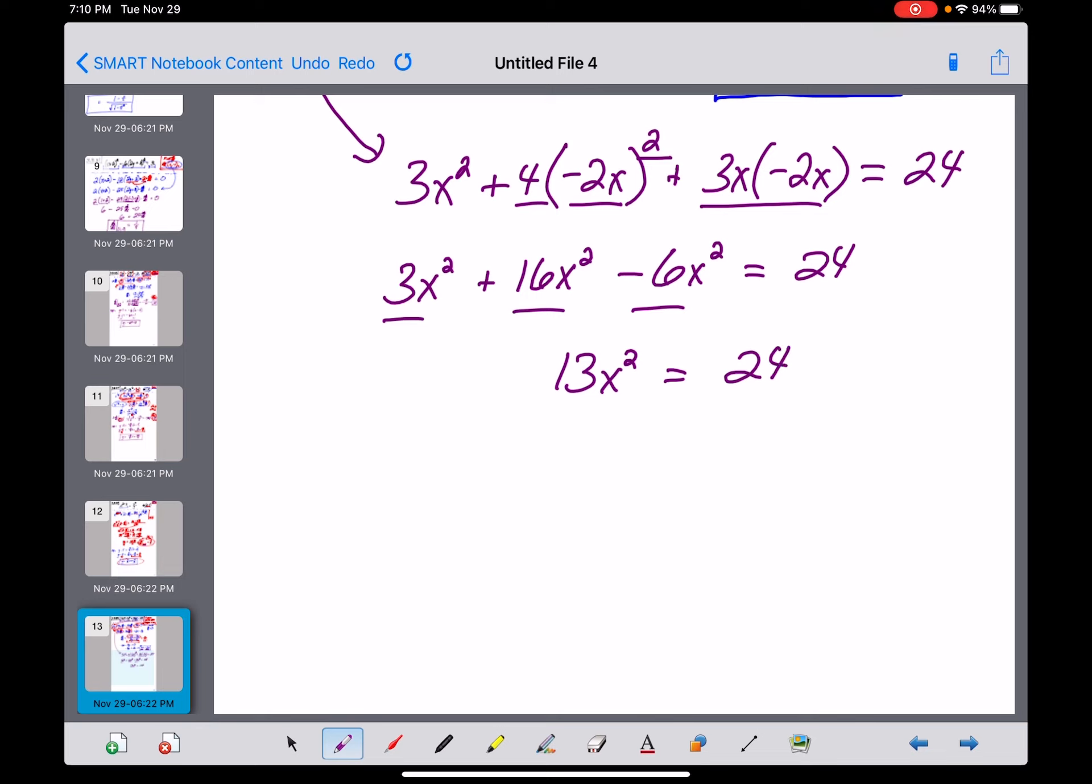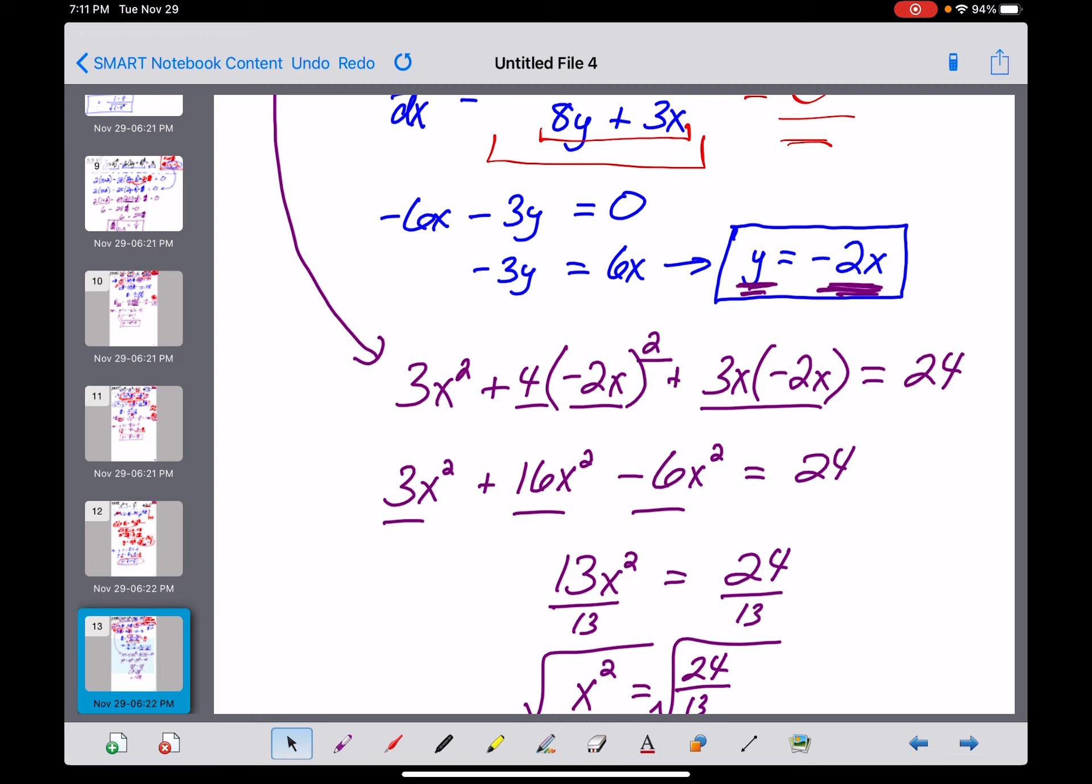What I was expecting to see right here is that we would divide by the 13, and I was hoping we were going to get a nice number right there, but we ended up with x squared equals 24 over 13, and then we would take the square root of both sides and get x equals plus or minus the square root of 24 over 13. That makes me wonder if I didn't goof something up right here. So I'm going to pause for just a second, go back and check my work.